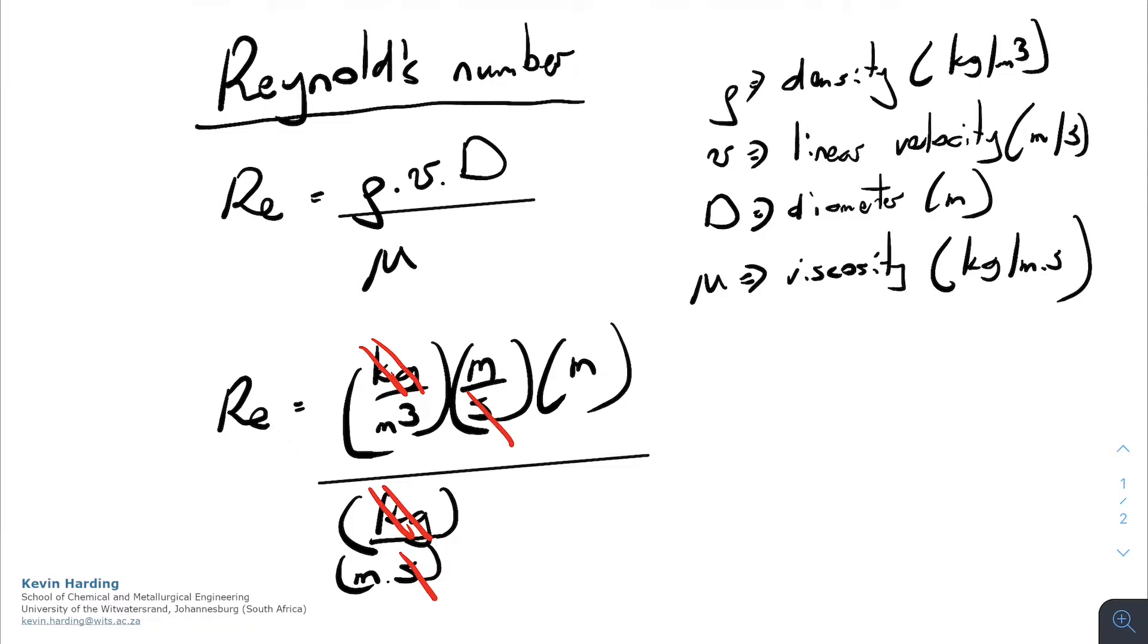There is one second which cancels. And we now have three meters that cancel out with a meters cubed over there. So that means that the Reynolds number is dimensionless.